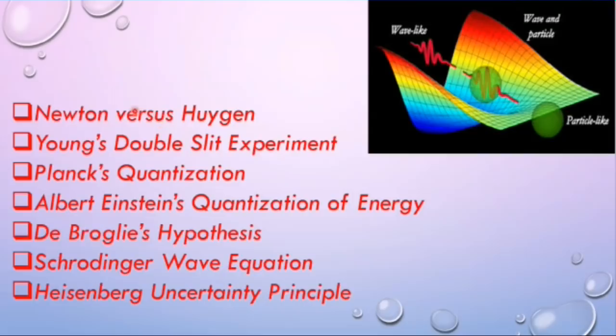To recap briefly, Newton said light is a particle, Huygens said light is a wave. Young on the basis of double slit experiment proved that light is a wave. Planck's quantization and Albert Einstein's quantization of energy proved particle nature of electromagnetic radiation. All these scientists concluded that light sometimes behaves as a particle and sometimes as waves. This was the reason that de Broglie put forward his question and it was later proved that not only electromagnetic radiation but all matter has dual nature.